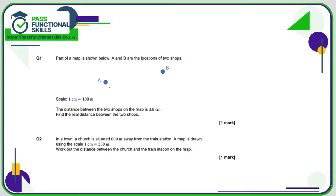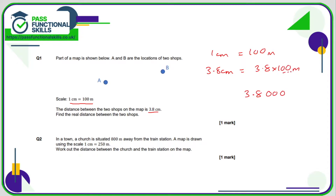Question one: the distance between A and B is 3.8 centimeters and the scale is 1 centimeter equals 100 meters. So if one centimeter on the map represents 100 meters in real life, then 3.8 centimeters represents 3.8 times 100 meters. We move the decimal point two positions to the right, giving 380 meters.